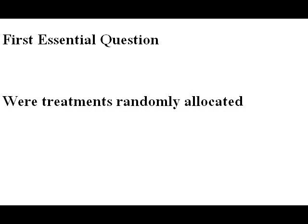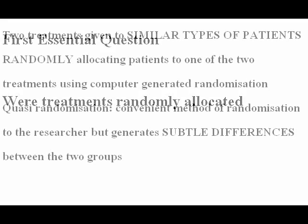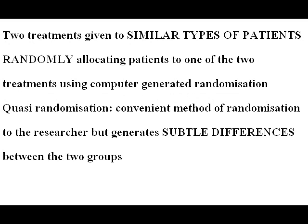Let's start answering the first question: were treatments randomly allocated? For a fair comparison, the two treatments must be given to similar types of patients. This can be best achieved by randomly allocating patients to one of the two treatments. The process uses computer-generated random numbers to avoid any problems of human frailty.